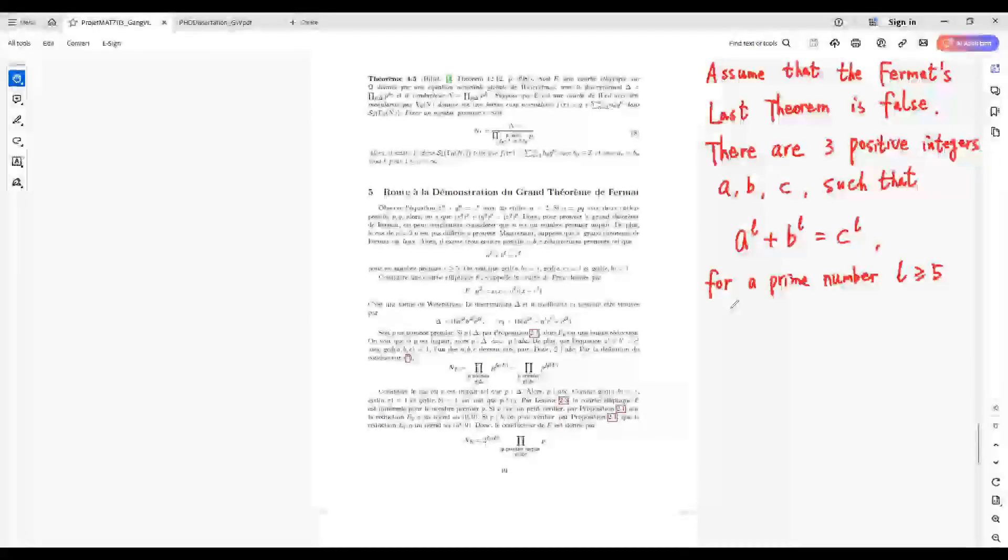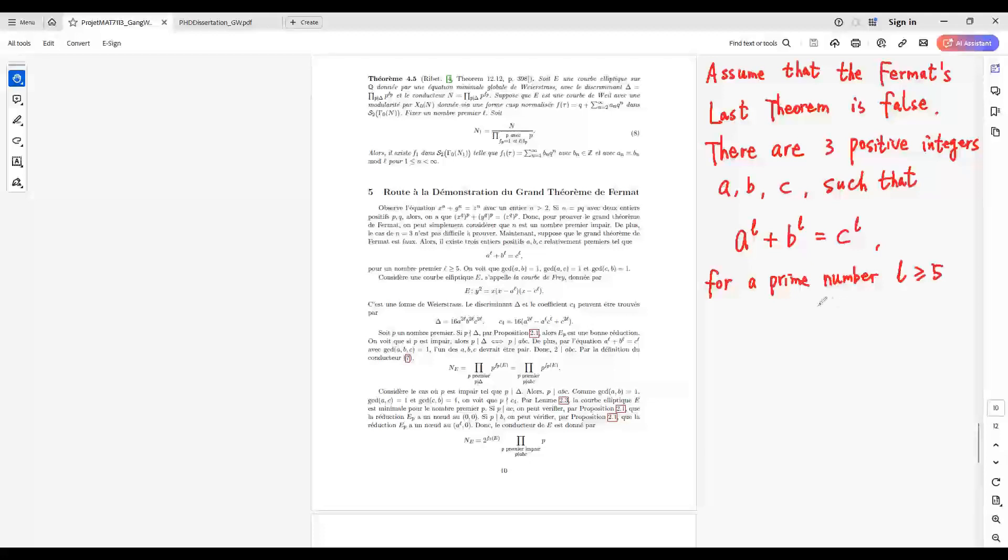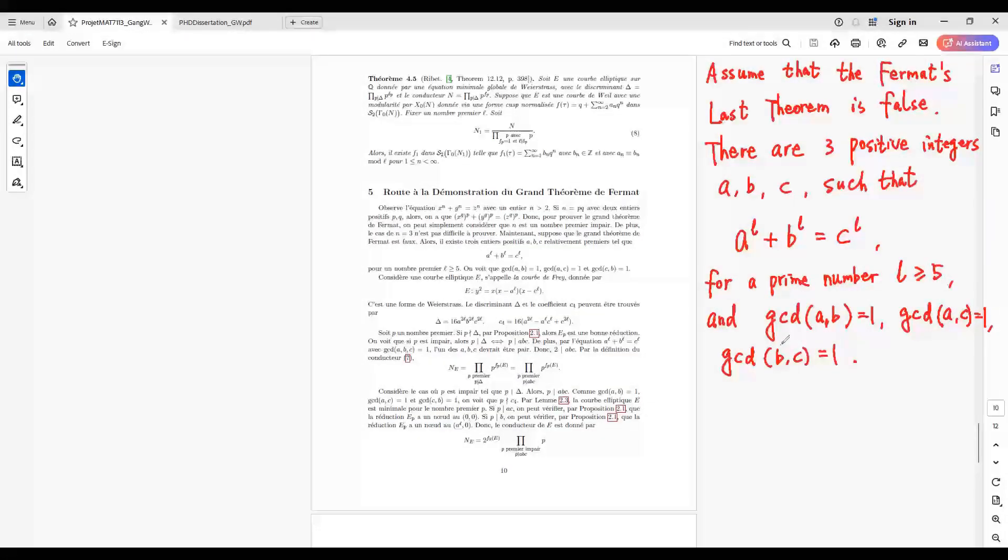Furthermore, we can suppose L is a prime number and the integers A, B, and C are relatively prime.